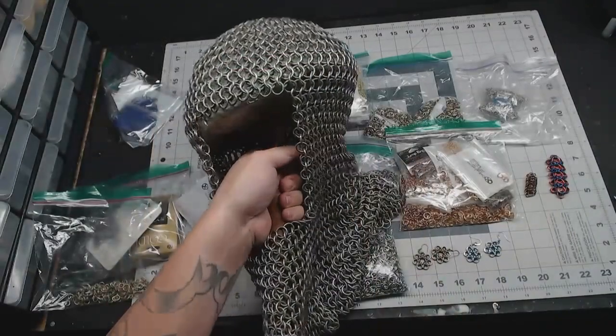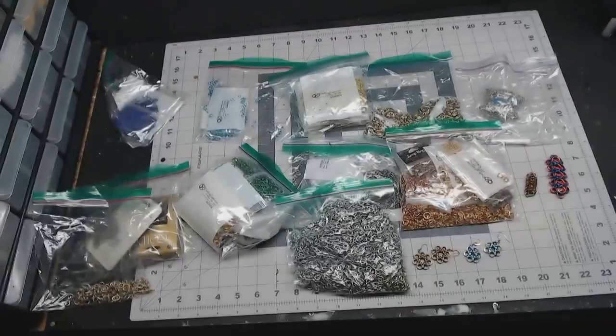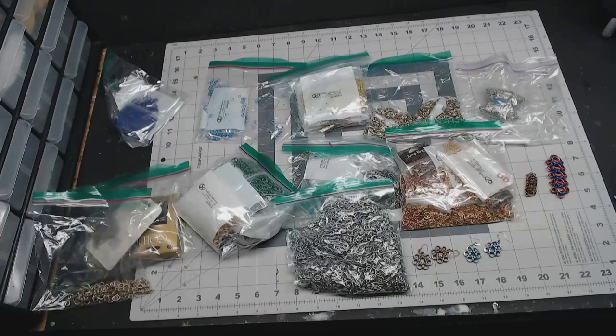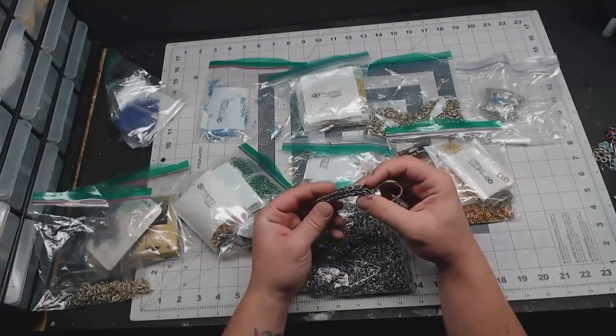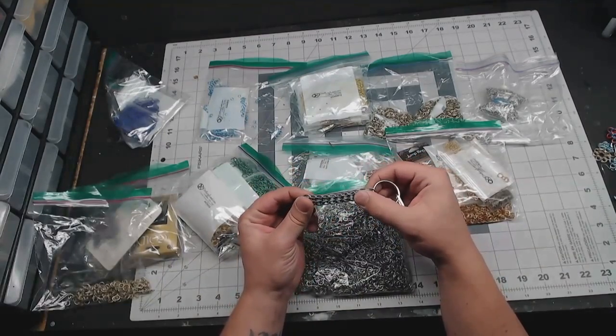You can make coifs or hoods, and you can also do jewelry like earrings or bracelets. There are a whole bunch of different patterns or weaves that you can do. This one is called full Persian and it's easily my favorite of the rope weaves.